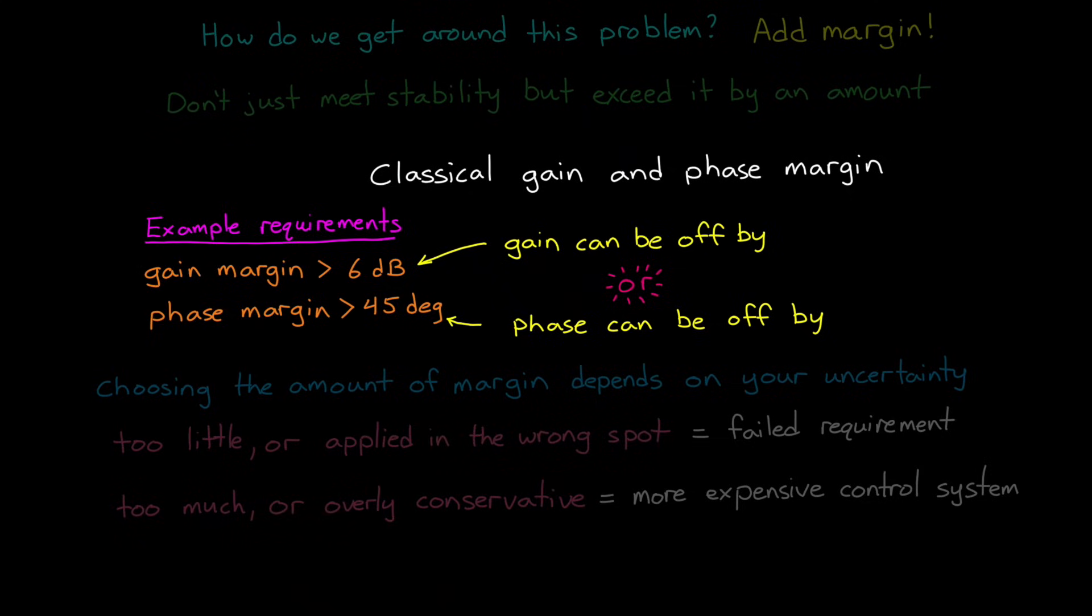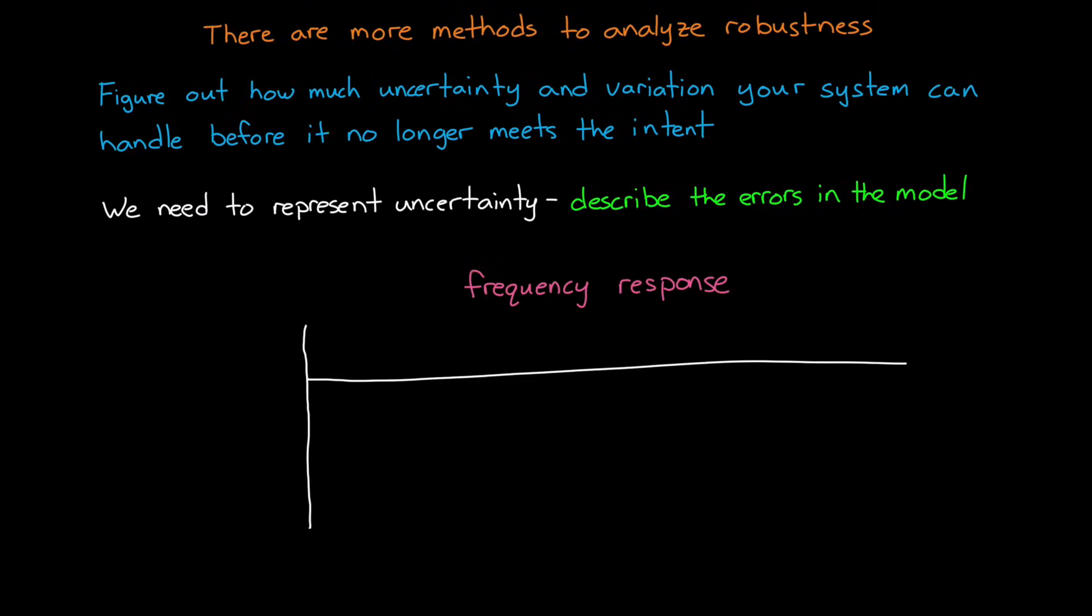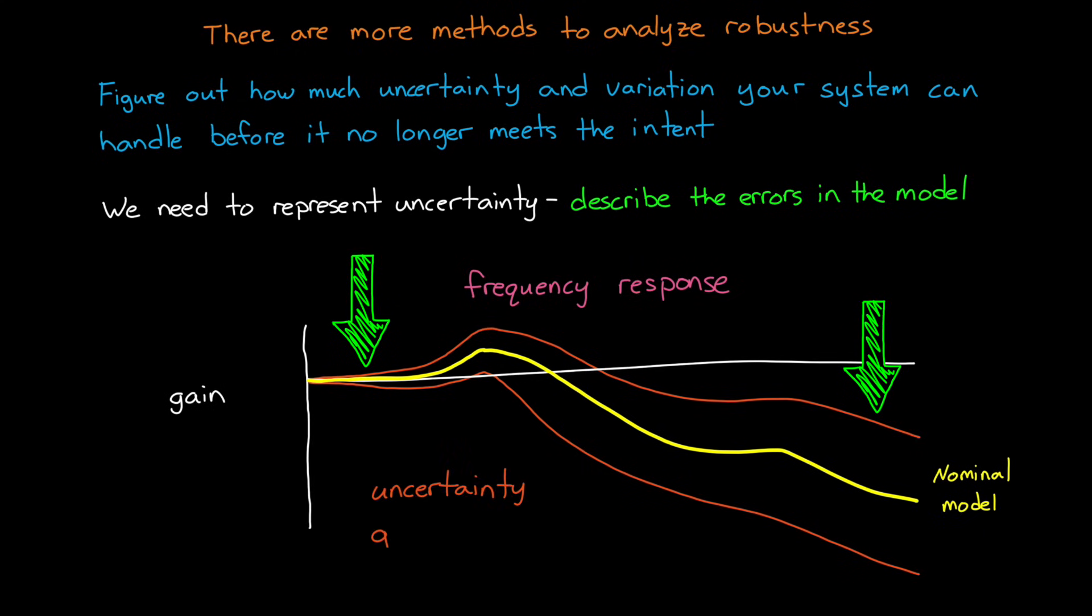But we can represent uncertainty in other ways. For example, the amount of uncertainty could be based on frequency. We might say that we have a lot more confidence in our model at low frequencies than we do at higher frequencies. So we may require less margin in the design for low frequency behaviors, while requiring more margin for high frequency behaviors.